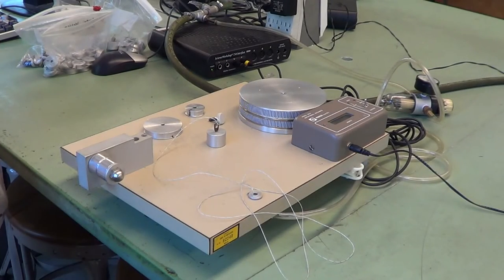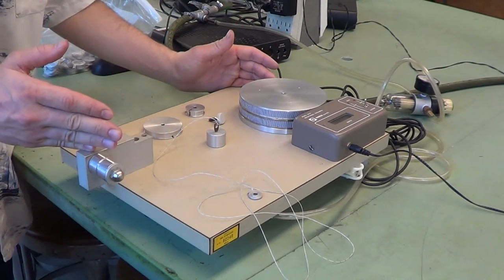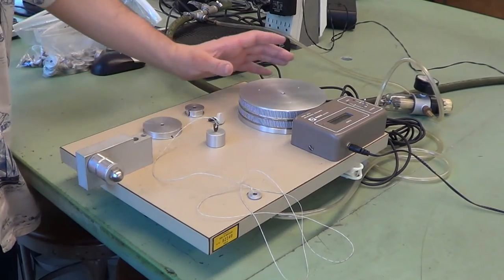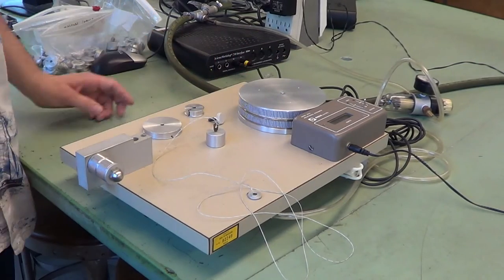For the rotational acceleration experiment, we have the entire rotational dynamics apparatus. In this case, we're only using the top disc, which is made of aluminum.